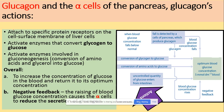Glucagon is produced by alpha cells of the pancreas. It attaches to specific protein receptors on the cell surface membrane of the liver cells, which activates enzymes that convert glycogen to glucose — a process that can also involve gluconeogenesis, which is the conversion of substrates such as amino acids or glycerol into glucose. All of these processes increase the level of glucose.